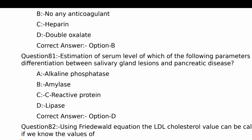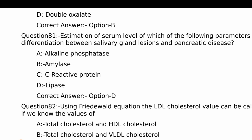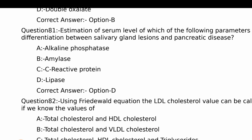Estimation of serum levels of which of the following parameters helps in differentiation between salivary gland lesions and pancreatic disease? Option A - ALP, Option B - Amylase, Option C - CRP, Option D - Lipase. The right answer is Option D, Lipase.